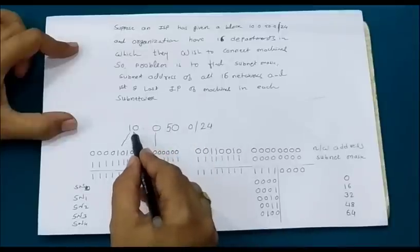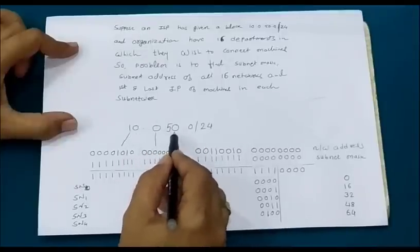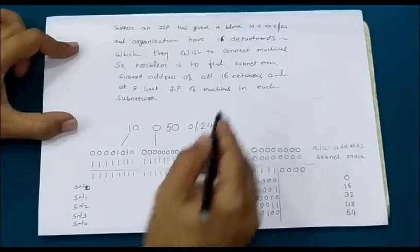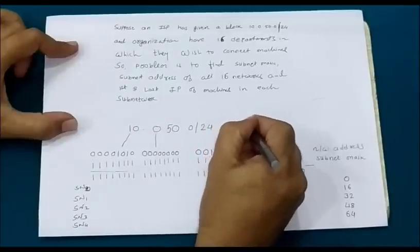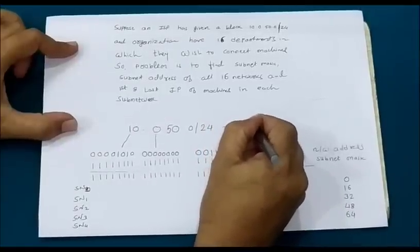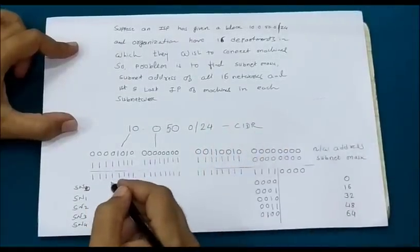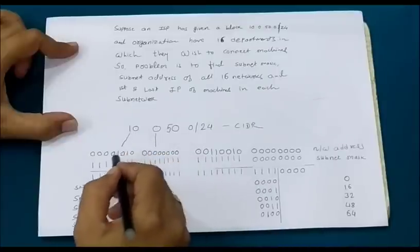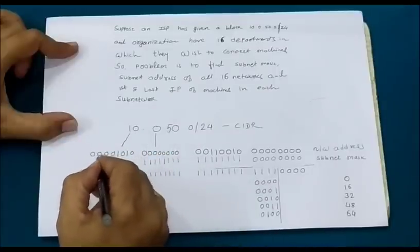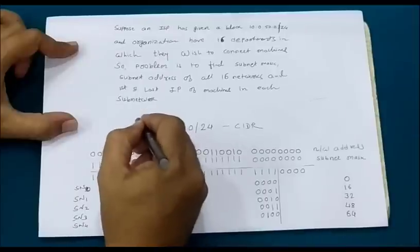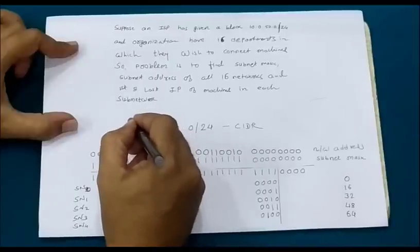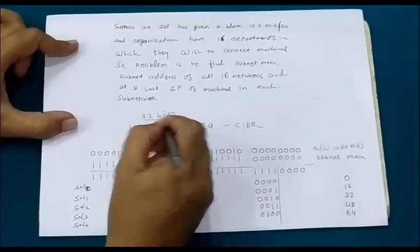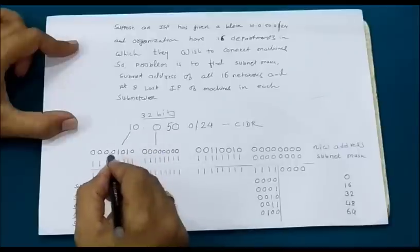The block given to us is 10.0.50.0/24 — this is called CIDR notation. If I try to write 10 in binary, this is how you can write it. The total length of an IP address is 32 bits, divided into 4 segments of 8 bits each.